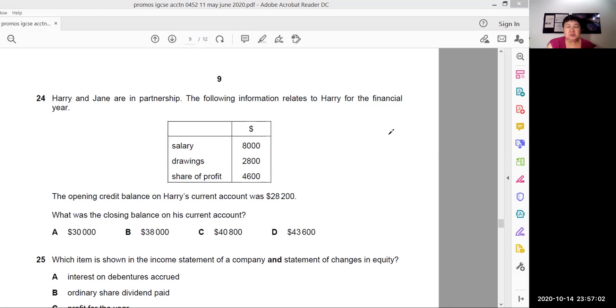Okay, so what do you do? You just open a Harry's current account. So what do we have? The credit balance. So the balance brought down. In your exam, please write in full. To save time, I wrote short form. Please in your exam, write in full. So the opening credit balance was $28,200. Place it on the credit.